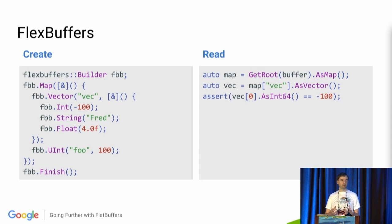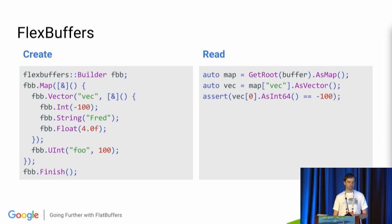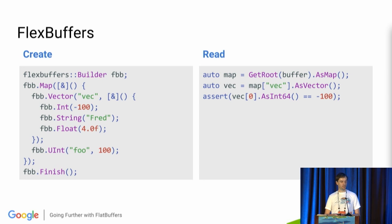FlatBuffers is generally a great way to store strongly typed data, but what if you need to store data for which you can't define a schema yet? With FlexBuffers, we took all the advantages of FlatBuffers and turned them into a self-describing data structure. It still has in-place access without parsing, so it has similar speed advantages. You can share keys and values to get big space savings compared to JSON, and the serializer automatically finds the smallest possible representations for all your values, often down to a single byte.